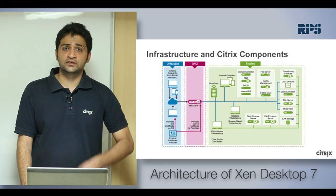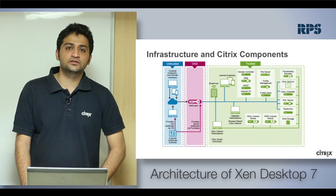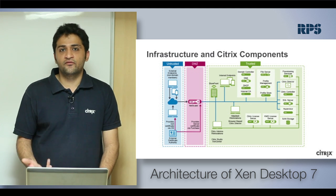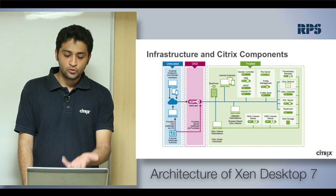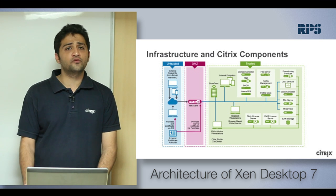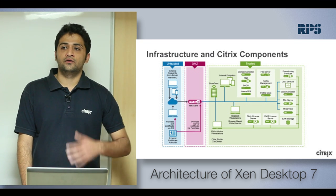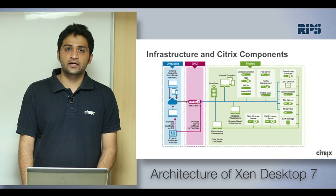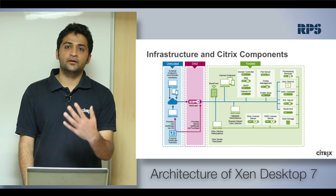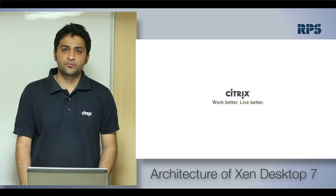In XenApp 6.5 we used to manage the complete farm through App Center, and in XenDesktop 5.6 through Desktop Studio. Now Citrix has a single unified console called Studio, used to manage everything — create machine catalogs, create delivery groups, and deliver to end users. You have Provisioning Services for streaming vDisks, Citrix Director for monitoring the complete site, and Citrix admin workstations where you connect through Director to monitor all activity. That's the architecture of XenApp and XenDesktop 7.5.